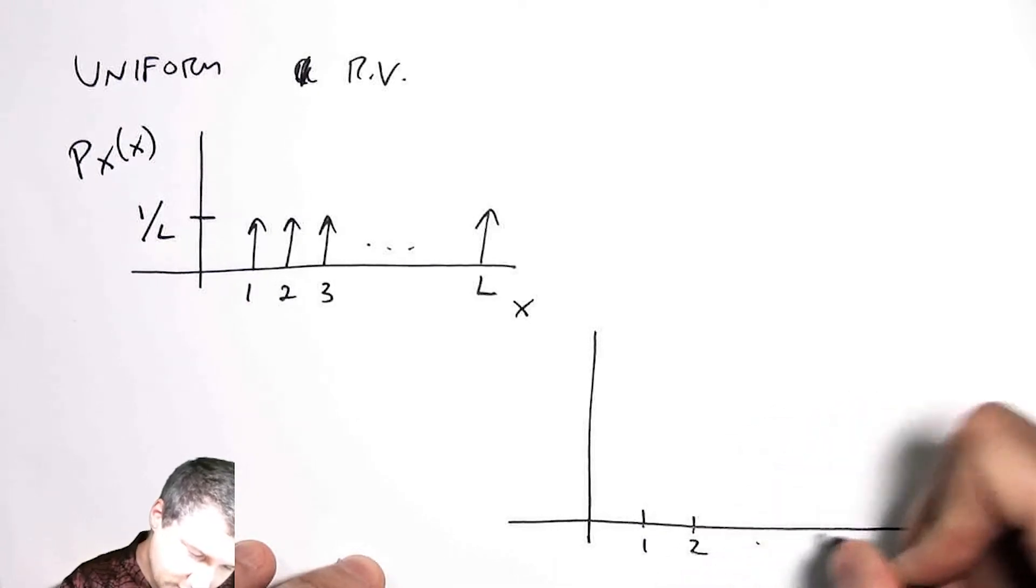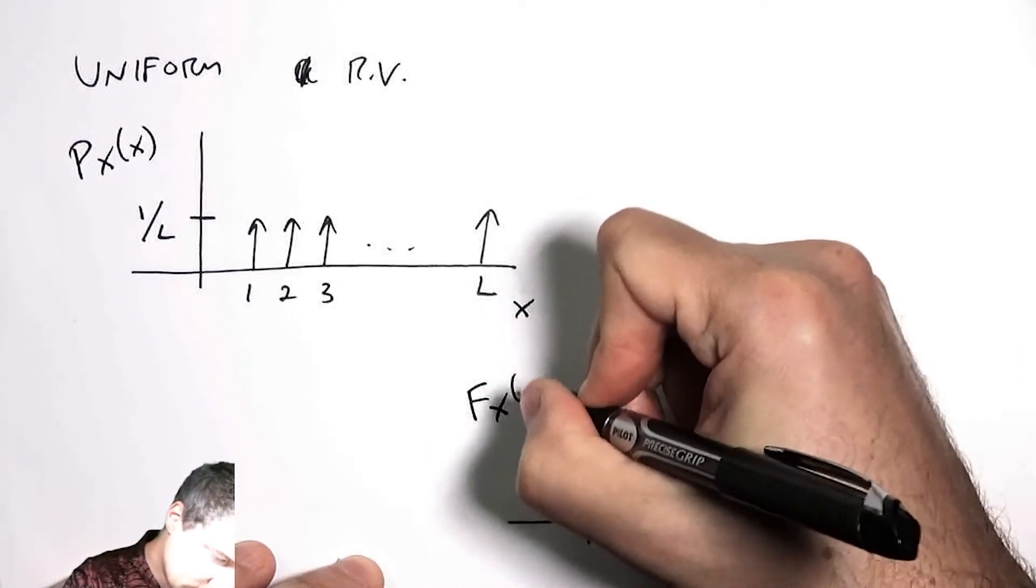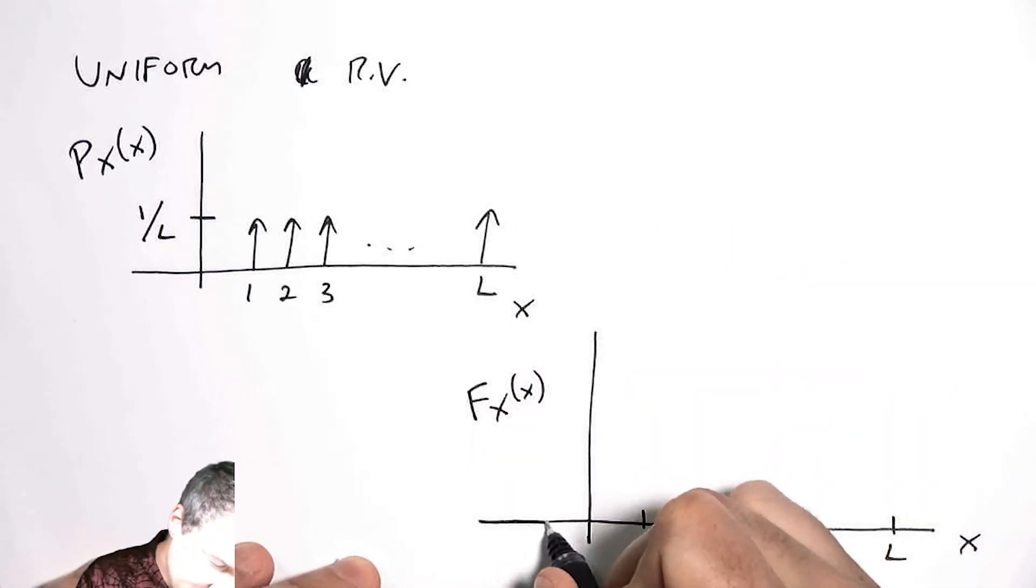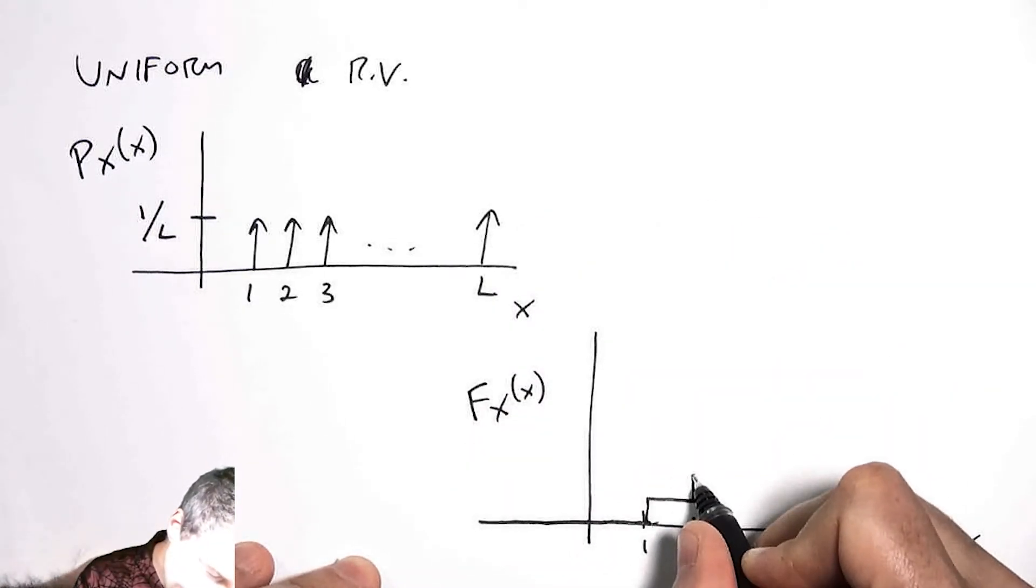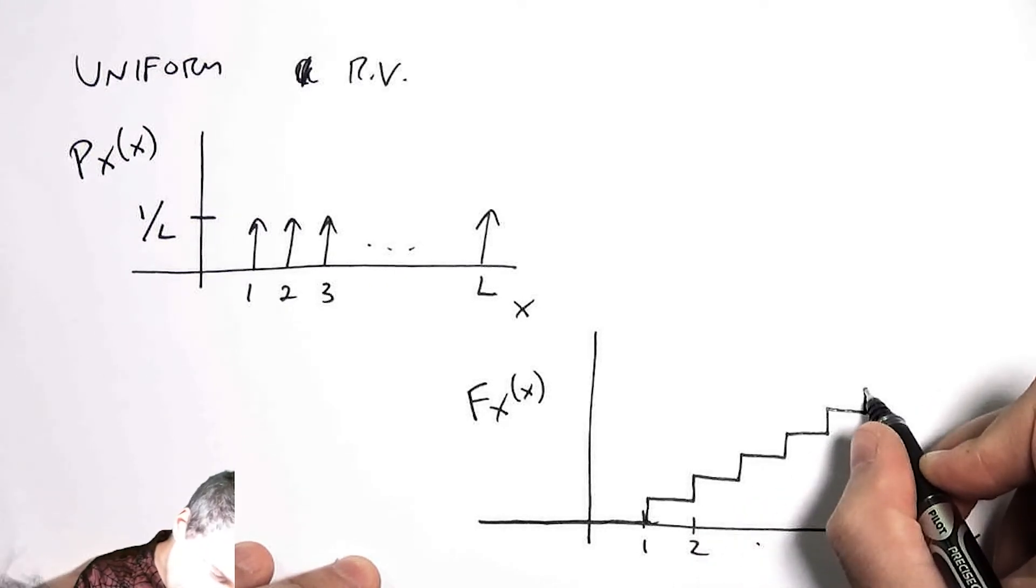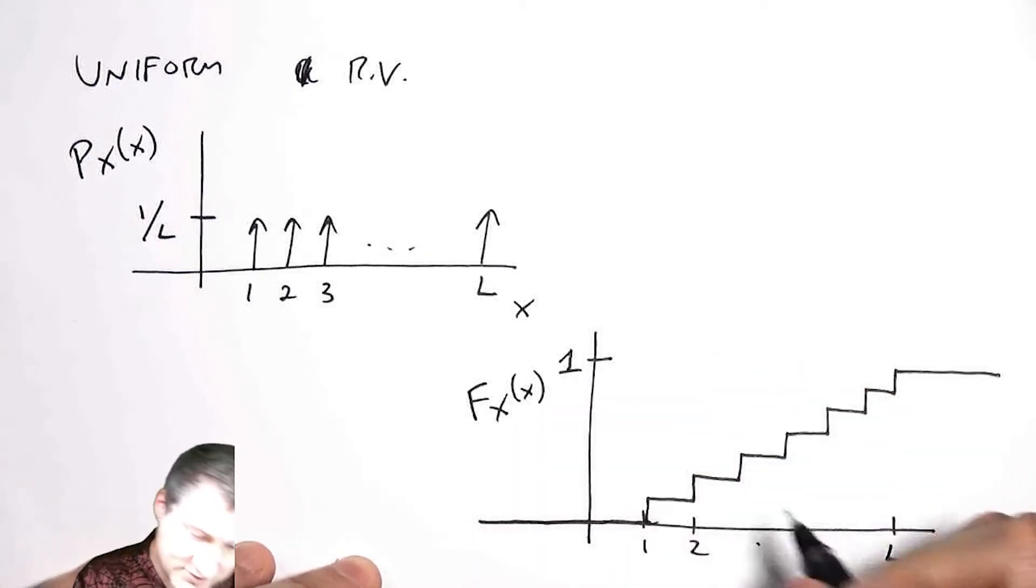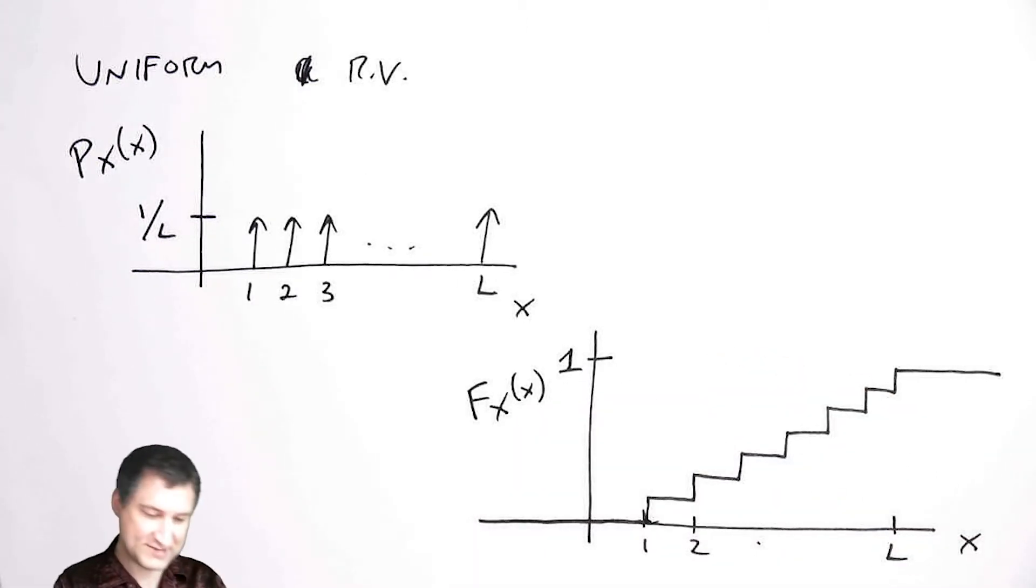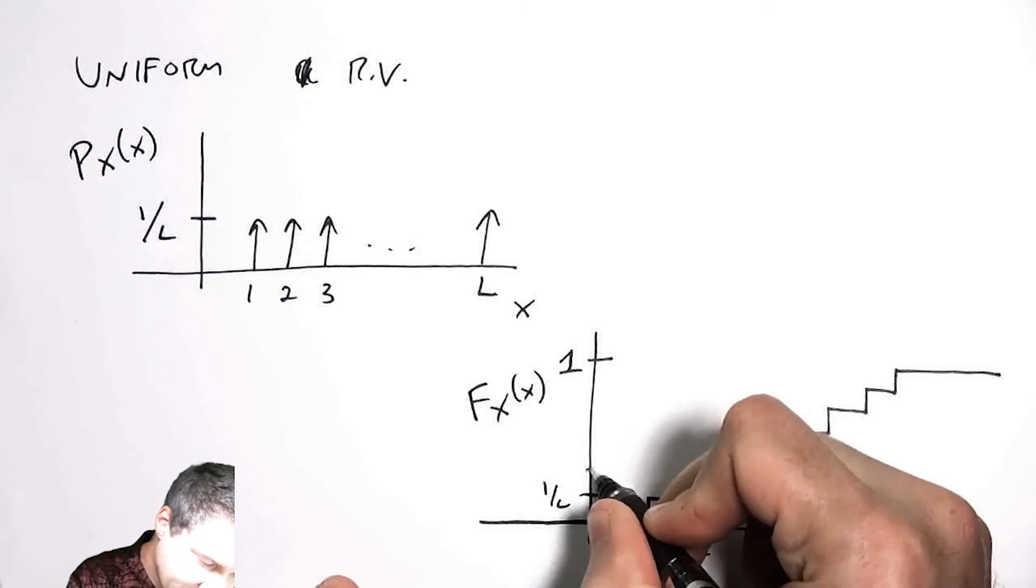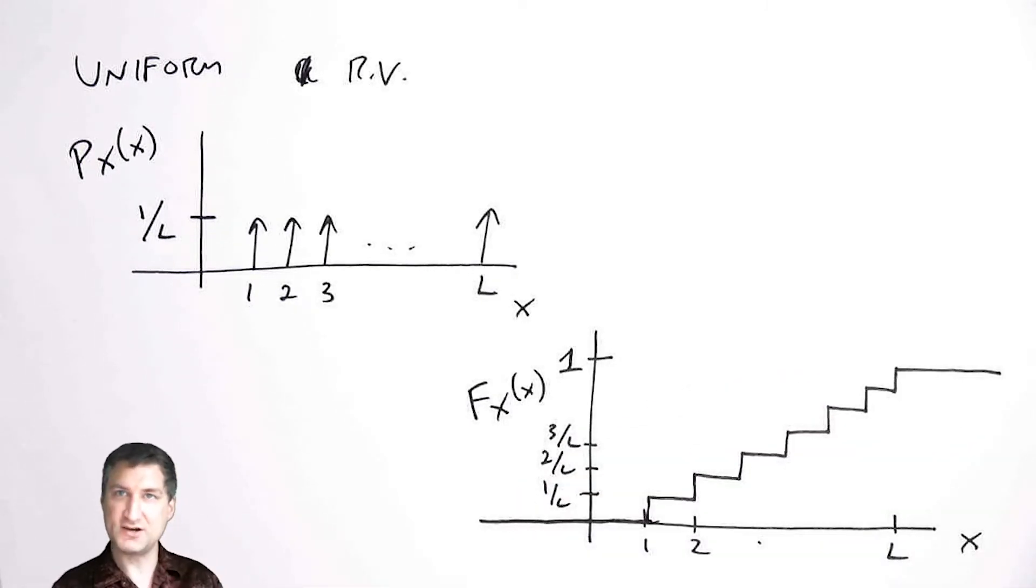So the corresponding CDF is going to look like—again, here are my probable outcomes. I get nothing until the first outcome, and then my staircase just basically accrues a uniform amount of probability until I get to the end. So all these stair steps have exactly the same height. I have like one over L, two over L, three over L as I climb up the stairs.